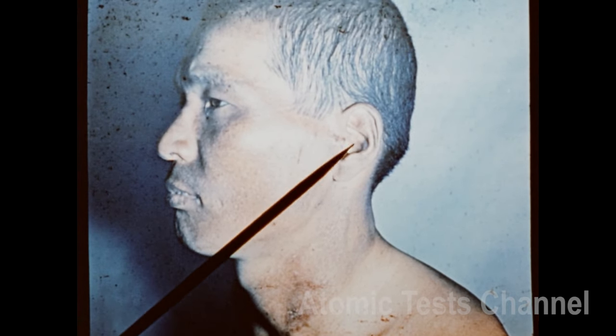Here is a typical flash burn injury. Some areas, such as the collar line, the nostrils, and portions of the ear, were shadowed from the flash and escaped injury.